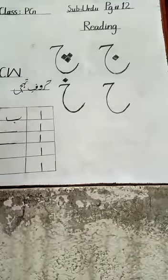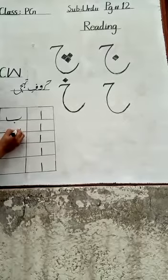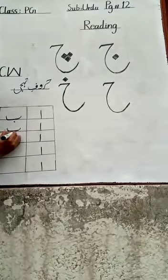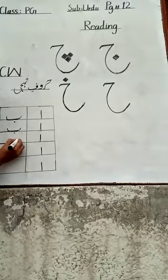You should write neat and clean. We will write bay. What is this? Bay. Now we will write down below.